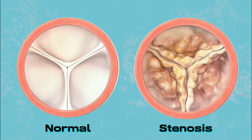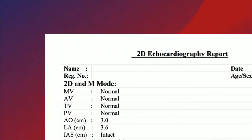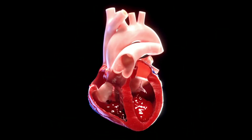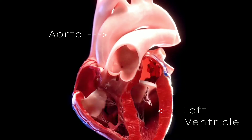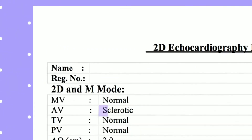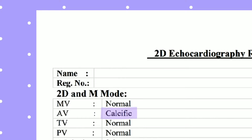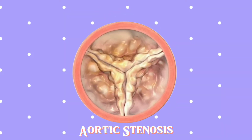This condition is called mitral stenosis, which may require mitral valve repair or replacement. Next is AV — aortic valve. This valve is situated between the aorta and left ventricle. An abnormal aortic valve can be sclerotic or calcific, and it leads to a condition called aortic stenosis.